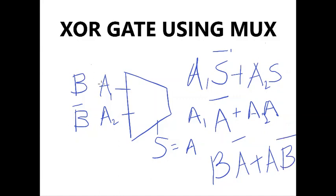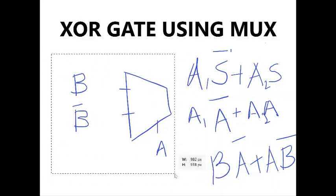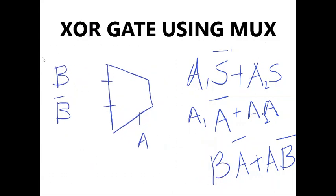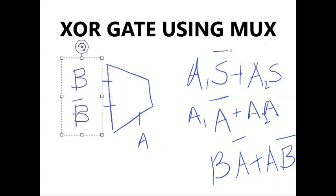What we are doing here effectively is replacing these input pins in the MUX equation with our new values, and we have a MUX which is going to act as an XOR gate.